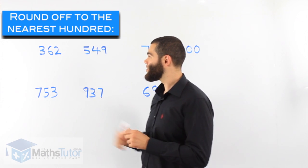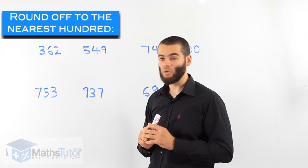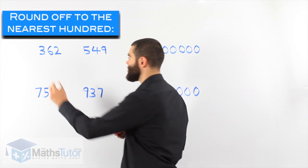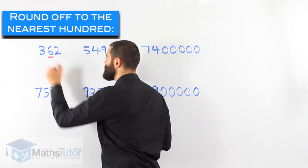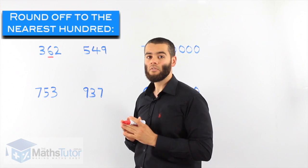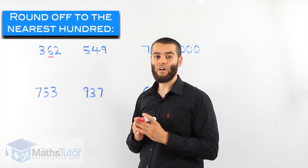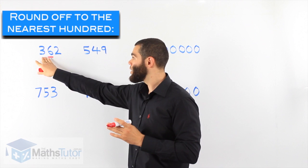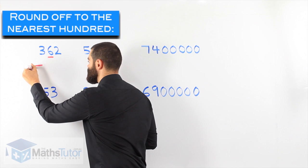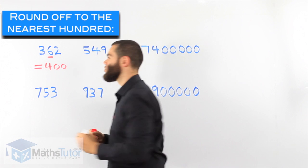Round off to the nearest hundred. Where is the hundred? There. Three hundred and sixty-two. So we look to the number on its right, and we notice that number on the right is a six. We ask it the question: are you five or more? The answer is yes, because this is six. Six is larger than five. So therefore we can round up, and our answer will be four hundred.